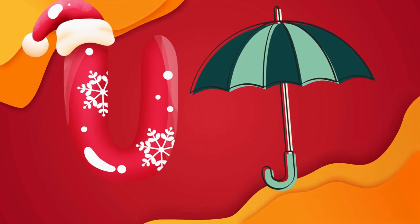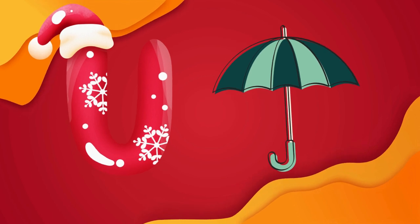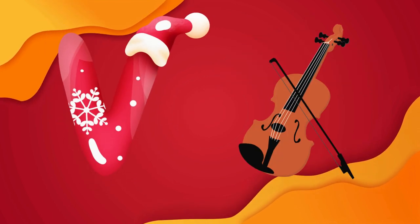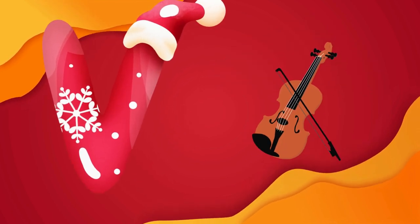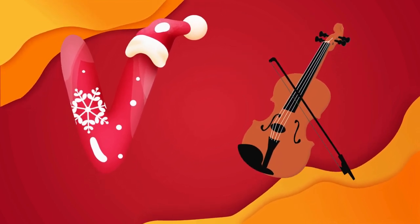U is for umbrella, u-u-u-umbrella. V is for violin, v-v-violin.